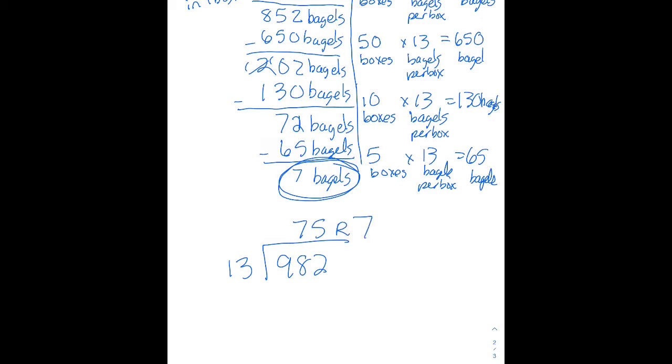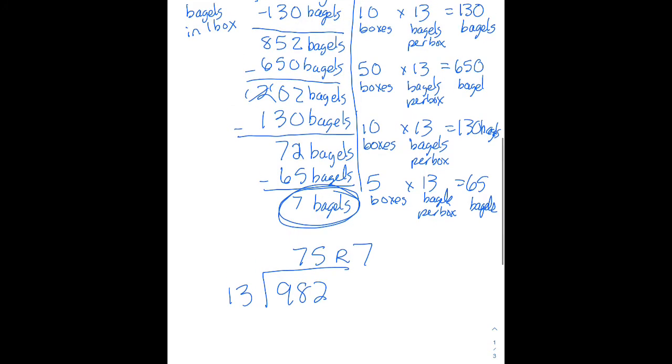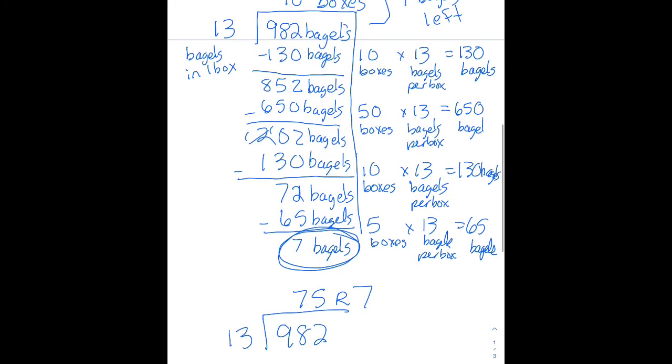so I'll have 75 boxes with 7 bagels left. 75, remainder 7. Note the units on the remainder. The units on the remainder match whatever the units on our total was because we've been subtracting off bagels and we're left with 7 bagels total.